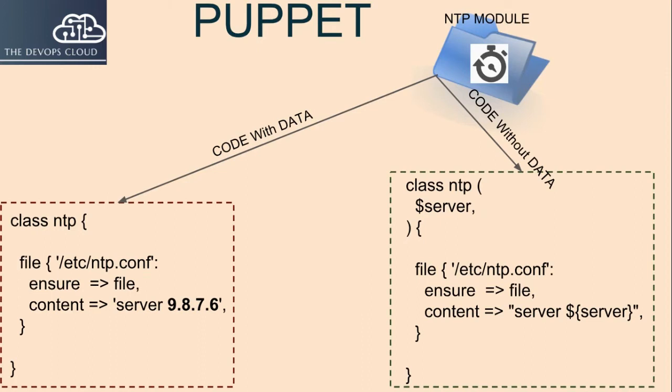As a simple example, consider NTP. A Puppet class to configure NTP should make sure an NTP configuration file exists and that it specifies a server. The logic of what to do is: create a file, set the right server. What the right server is will vary from organization to organization, environment to environment, and is what we call data. So in this example, a server entry with data in code can't be reused from organization to organization, as each organization will have different NTP servers.